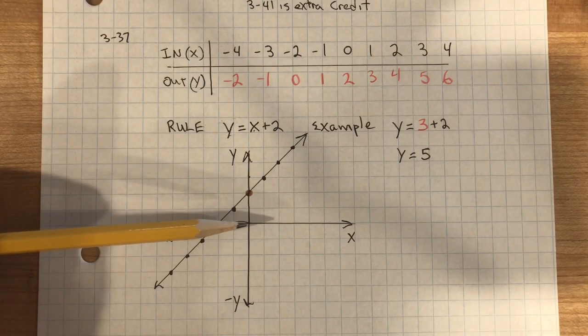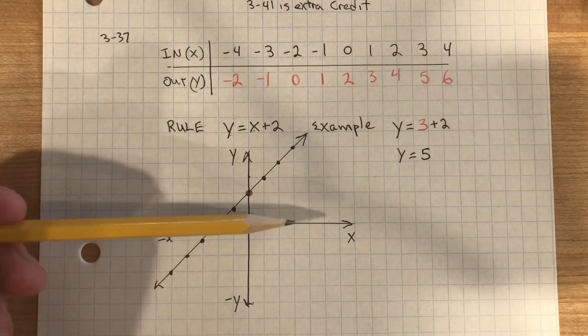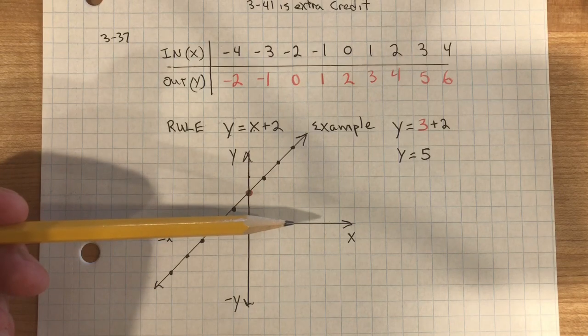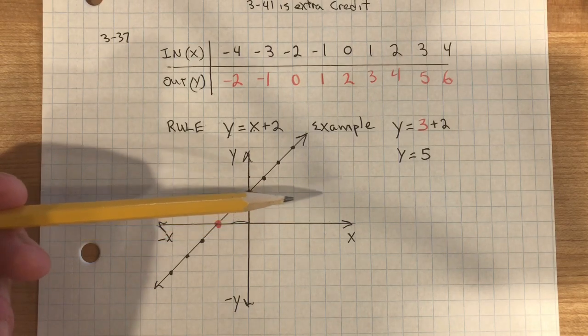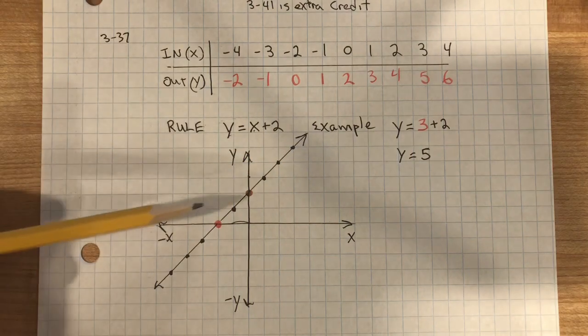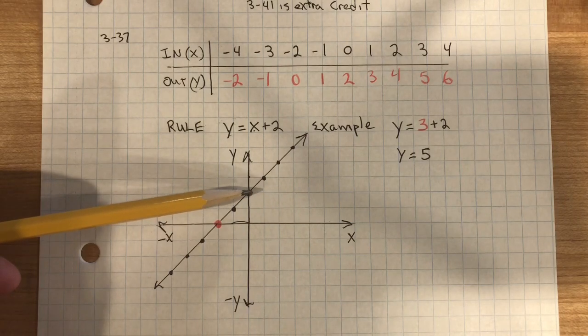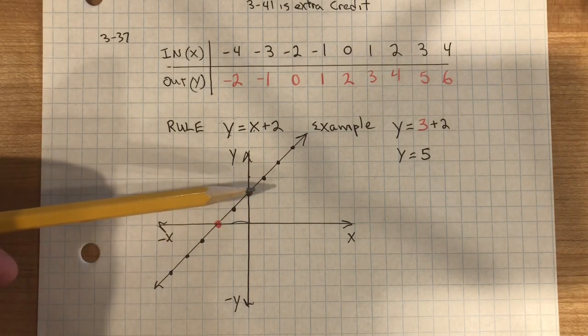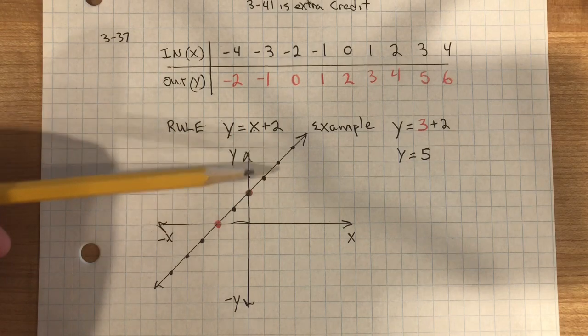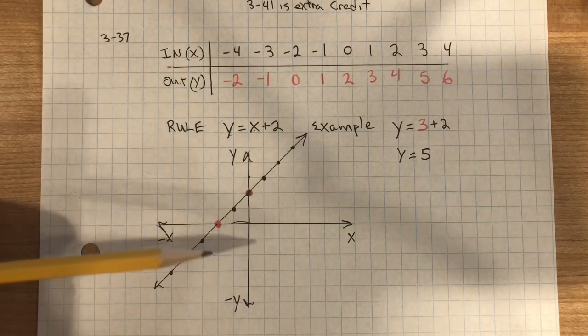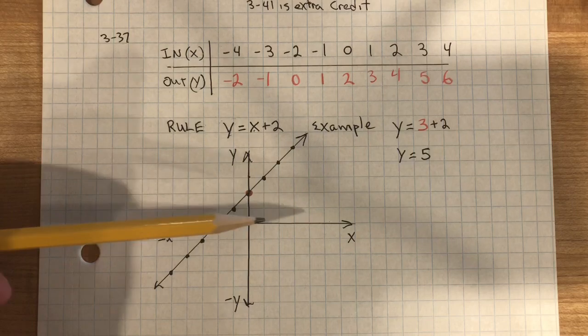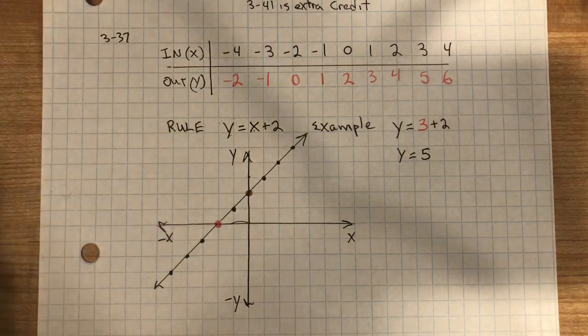Another point would be positive 3. 1, 2, 3 on the x. And 5 on the y. 1, 2, 3, 4, 5. These points that are in red are special because this is the y-intercept where the line crosses or intersects the y-axis. This is the x-intercept where it crosses the x-axis.